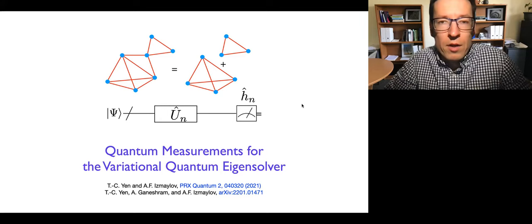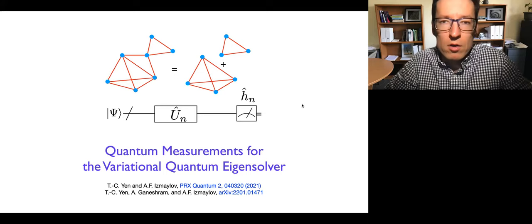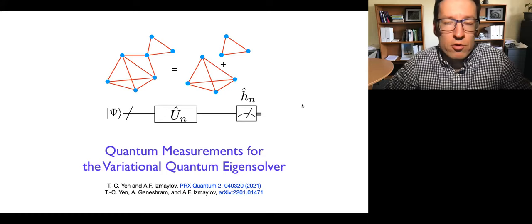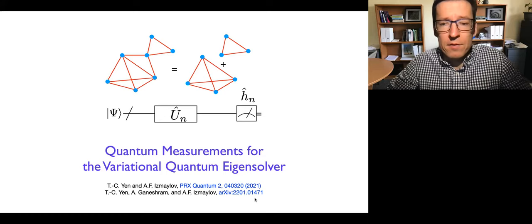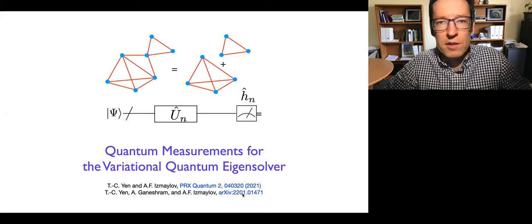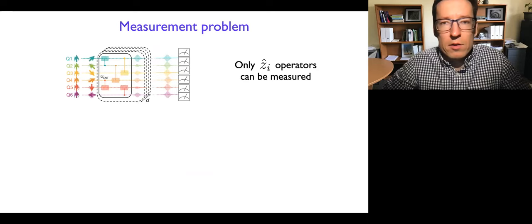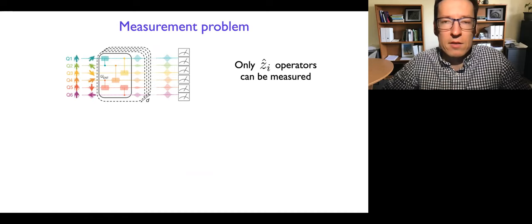Here I'd like to give a recent update on our developments in the quantum measurement problem for the variational quantum eigensolver when we're trying to solve the electronic structure problem. If you're not familiar with the electronic structure problem, please check my previous videos — I have a quite detailed description. The works I'll be talking about were published recently in PRX Quantum, and we also sent an update with even better techniques to arXiv quite recently.